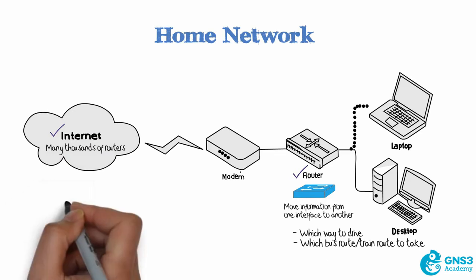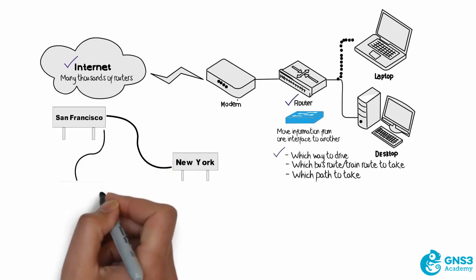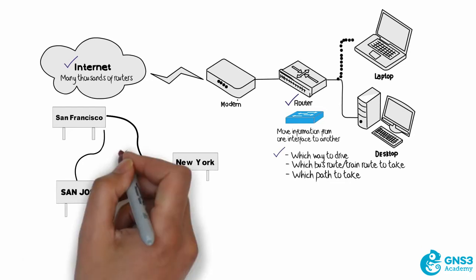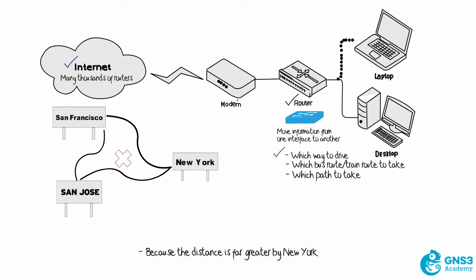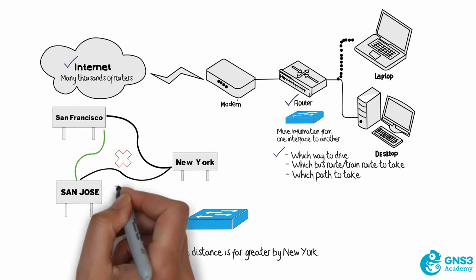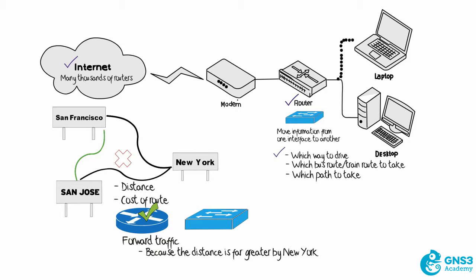If you were driving from San Francisco to New York, you would make a decision on which way to drive. If you were driving from San Francisco to San Jose, you probably wouldn't decide to drive via New York, because the distance is far greater via New York than it would be simply driving directly from San Francisco to San Jose. In the same way, a router will make a decision based on distance, or what's called a cost of route, to determine the best path to a destination.